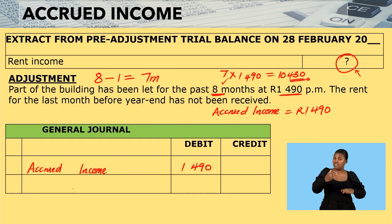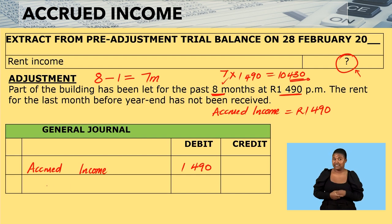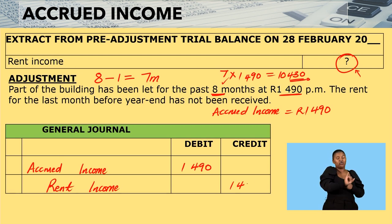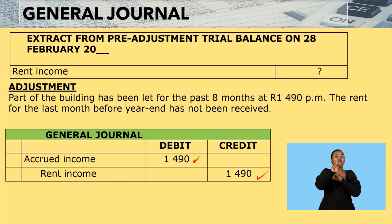I need an account to credit. Remember, rent income is an income account, and income increases on the credit side. So I will credit rent income with $1,490. To summarize: we debit accrued income and we credit rent income.